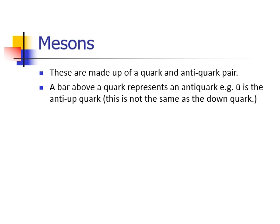Mesons have two quarks and they're always a quark and an anti-quark pair. They can be the same types but they can be different types. We represent the anti-matter by putting the line above it. So the u with the line on top is the anti up. That's not the same as a down quark.